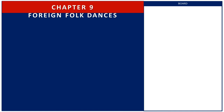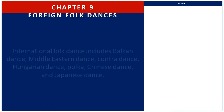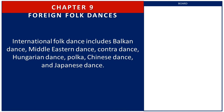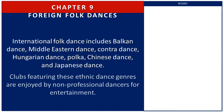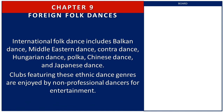Let us now move on to Chapter 9, which is about foreign folk dances. International folk dance includes Balkan dance, Middle Eastern dance, Contra dance, Hungarian dance, Polka, Chinese dance, and Japanese dance. Clubs featuring these ethnic dance genres are enjoyed by non-professional dancers for entertainment. Here are some example pictures.